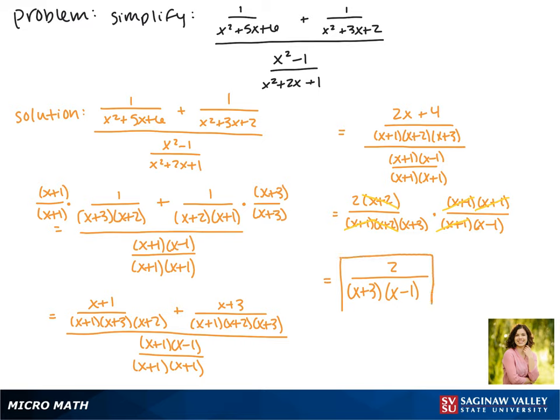So this is one way that we can write our answer or we could also distribute the denominator. So we could write it as 2 over x squared plus 2x minus 3.